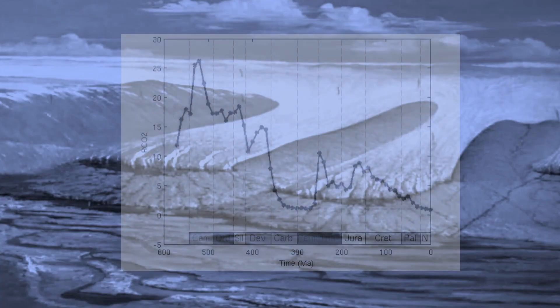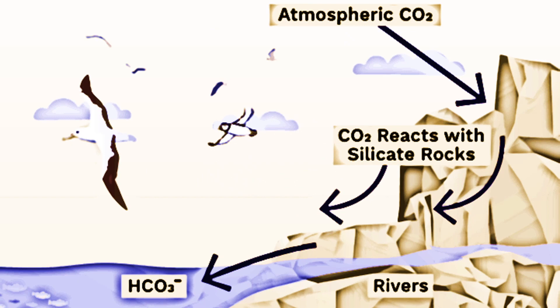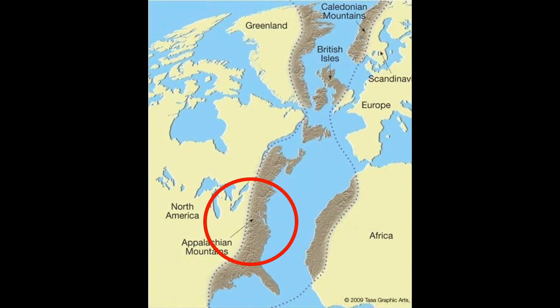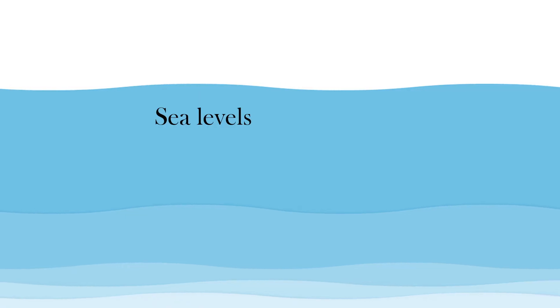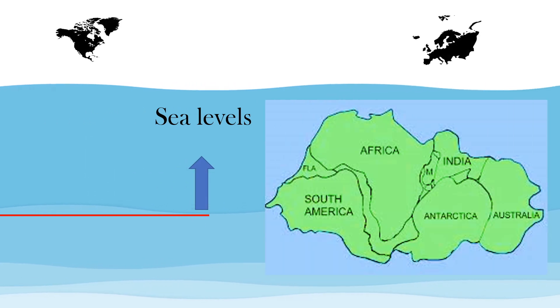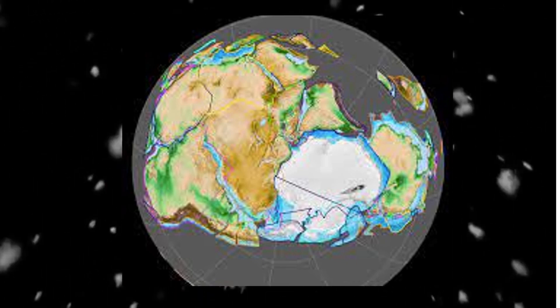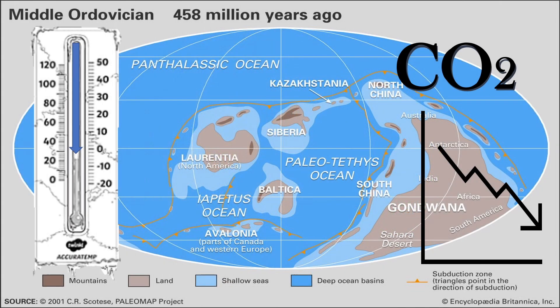Glaciation occurred during the Ordovician when CO2 was used up by elevated levels of silicate rock weathering, which was enhanced by rocks being pushed up by the ancient Appalachian mountain chain. Sea levels during this period were much higher than today, so the continent of Gondwana along with North America and Europe would have been covered with shallow seas. The huge Gondwana landmass drifted over the south pole during the late Ordovician where it completely froze over. This global cooling would have been extremely detrimental during the Ordovician as biota were used to greenhouse climates and could not adapt to this rapid change in temperature.